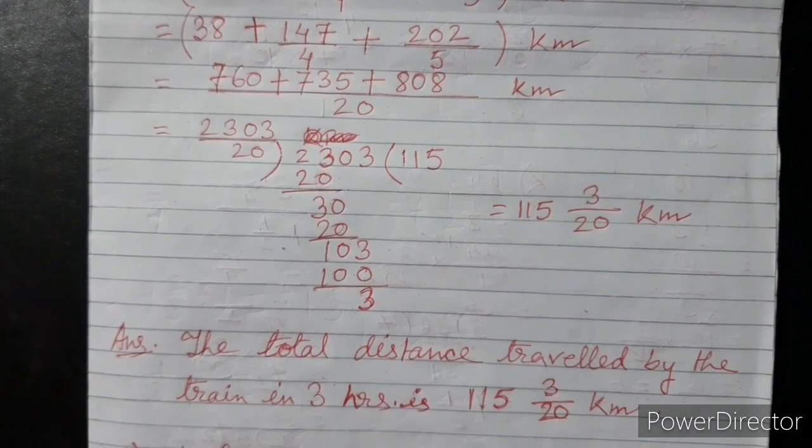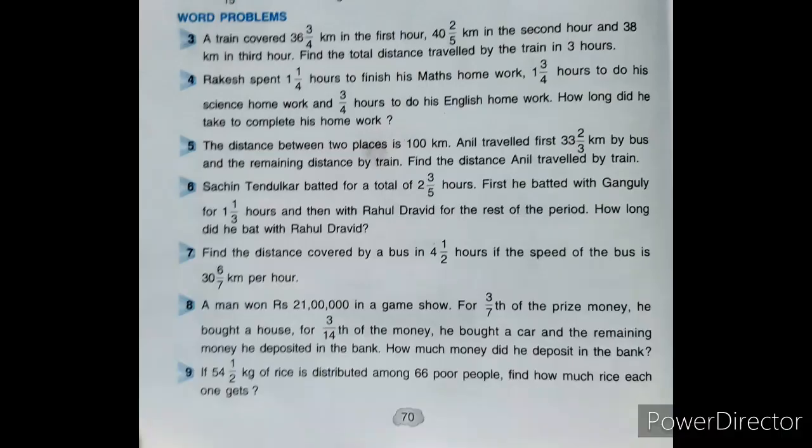Thik hai? Ab next sum dekho. Sum number 4: Rakhi spent 1 and 1/4 hours to finish his math homework, 1 and 3/4 hours to do his science homework, and 3/4 hours to do his English homework. How long did he take to complete his homework?